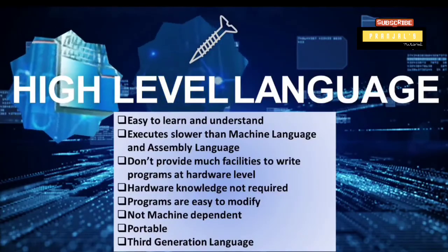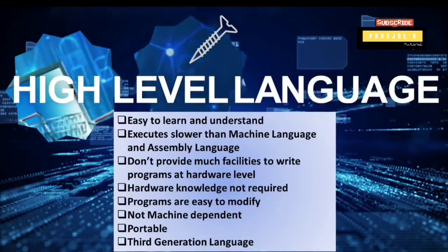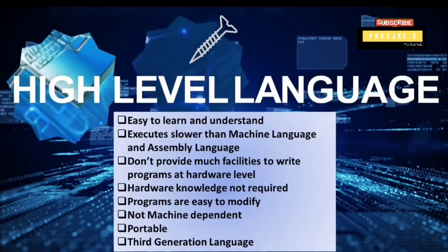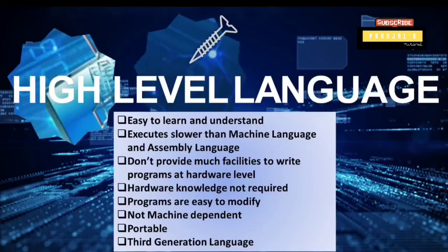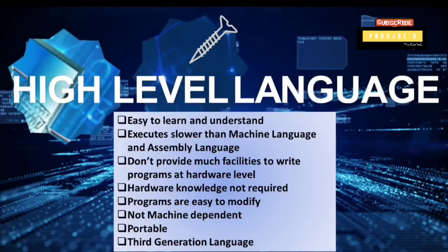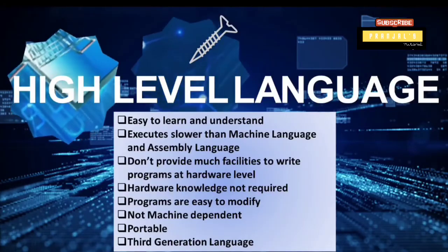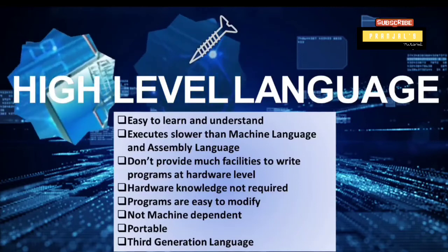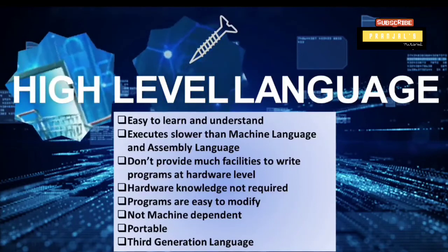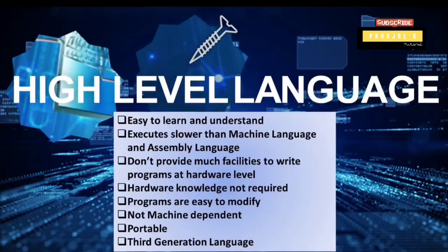Examples of high-level languages include C, C++, Java, Python, PHP, ASP, etc. So in this video we covered: what is coding, what is a programming language, and what are the different types of programming languages. Thank you for watching the video. See you in the next video.